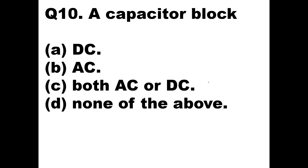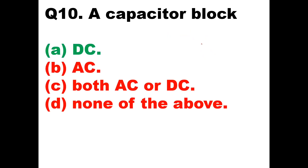Question 10: A capacitor blocks — ? The opposition to the flow of current by a capacitor is called capacitive reactance Xc, given as 1/(2πFC). The capacitor will have higher opposition when the value of frequency F is less. This value of F is less in DC, so the capacitor shows higher opposition for DC — it blocks DC. Option A is the right answer.